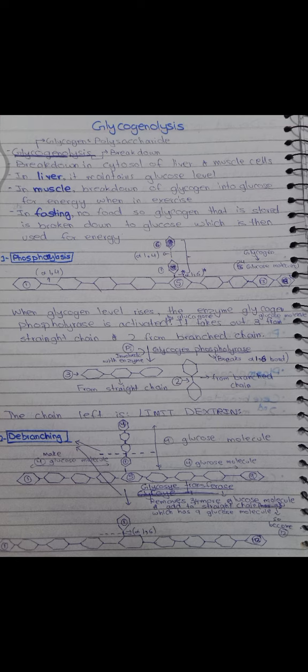The one remaining glucose molecule hanging at the branch point is freed by alpha-1,6 glucosidase, because this enzyme breaks the alpha-1,6 linkage. So it is called 1,6 glucosidase.